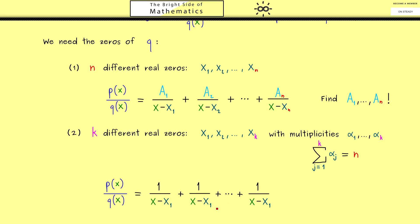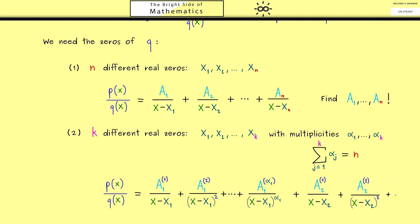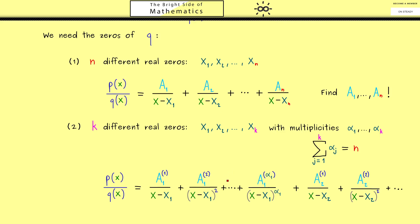The terms for each zero involve increasing powers: starting with power 1, then power 2, up to the multiplicity. As before, we don't have ones in the numerators but unknown coefficients, which now require two indices — one for the zero and one for the power. This makes the formula less compact. The same pattern repeats for every zero — for example, x2 with exactly alpha2 terms. The upcoming example will make this formula much clearer.